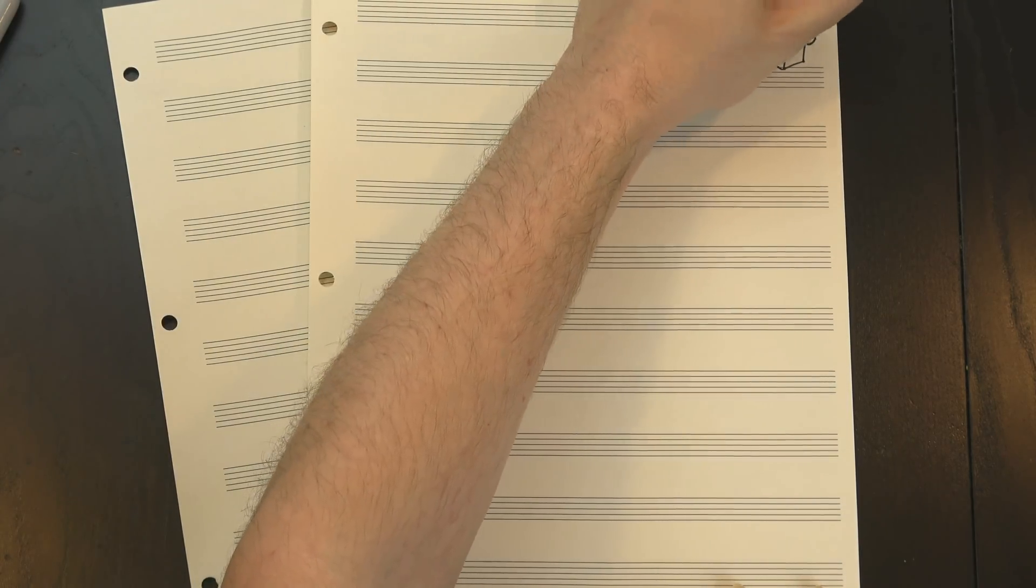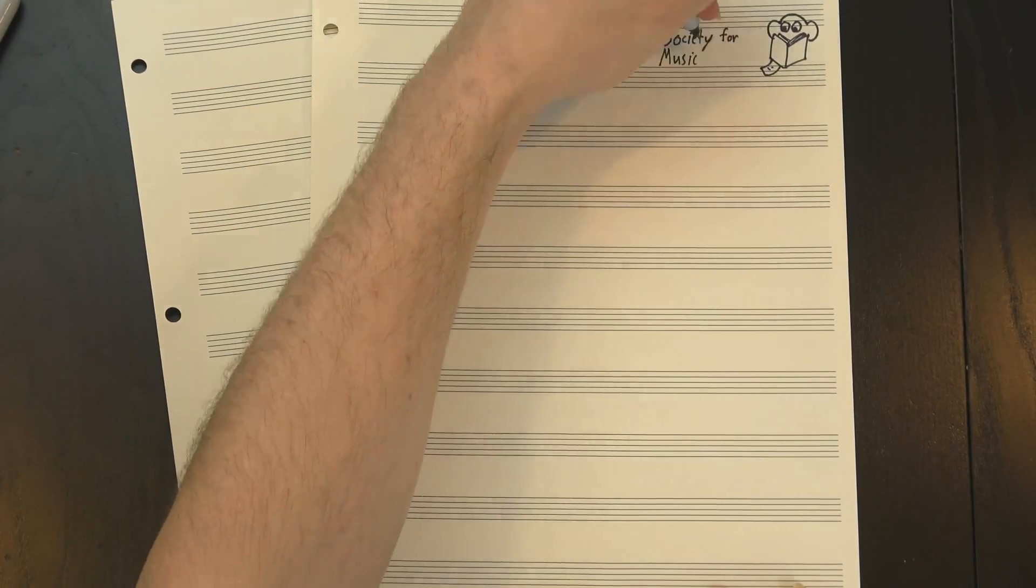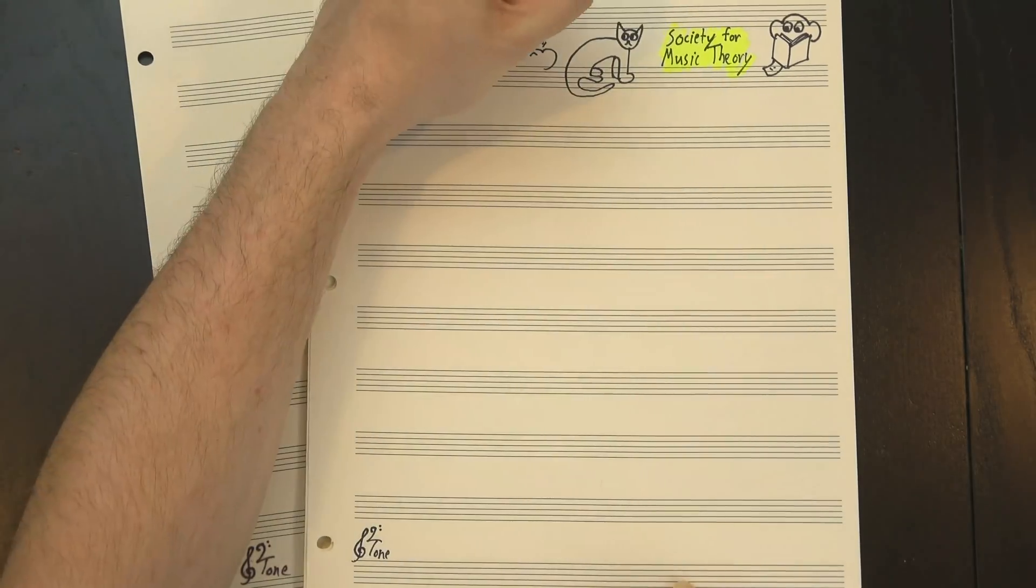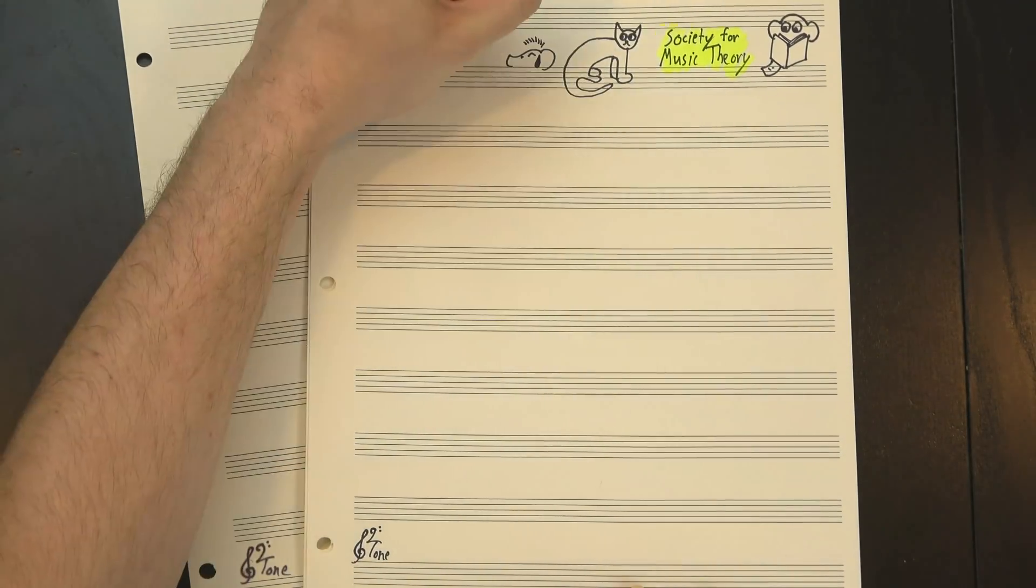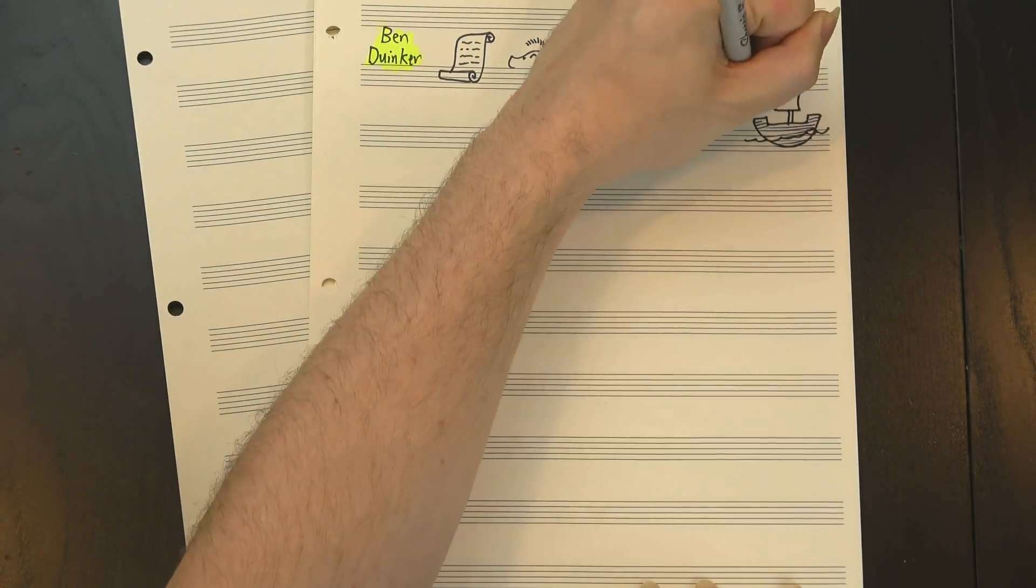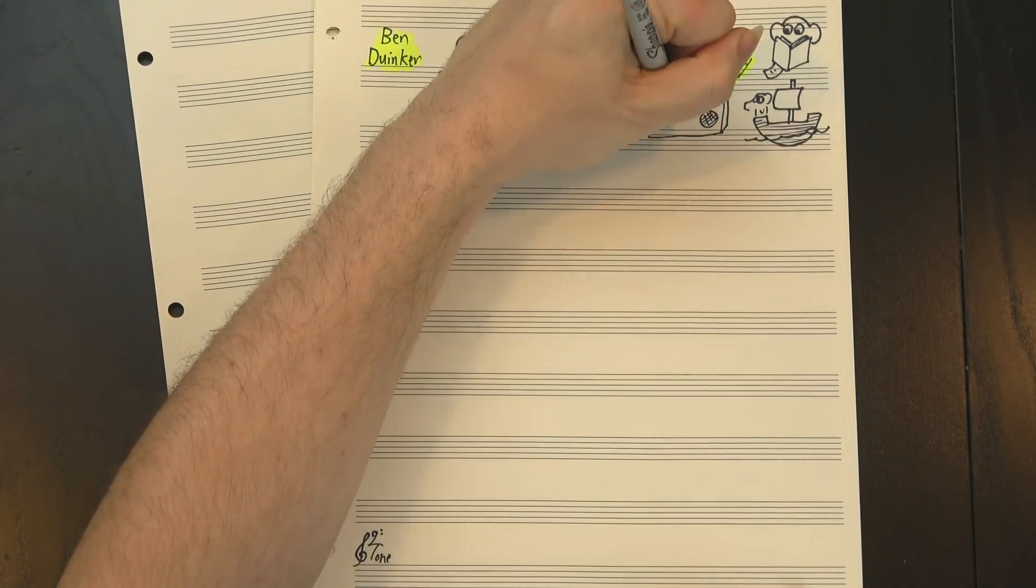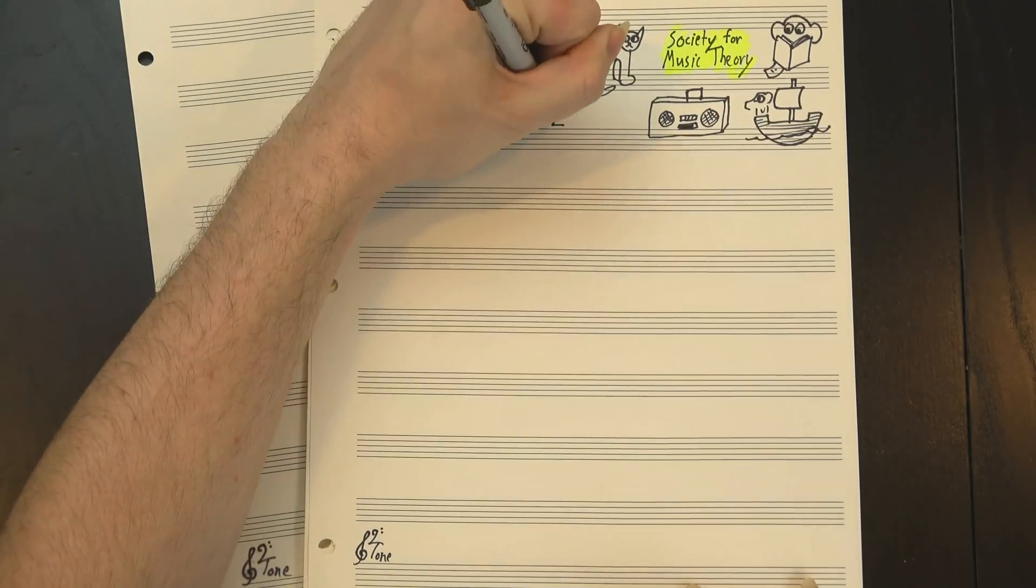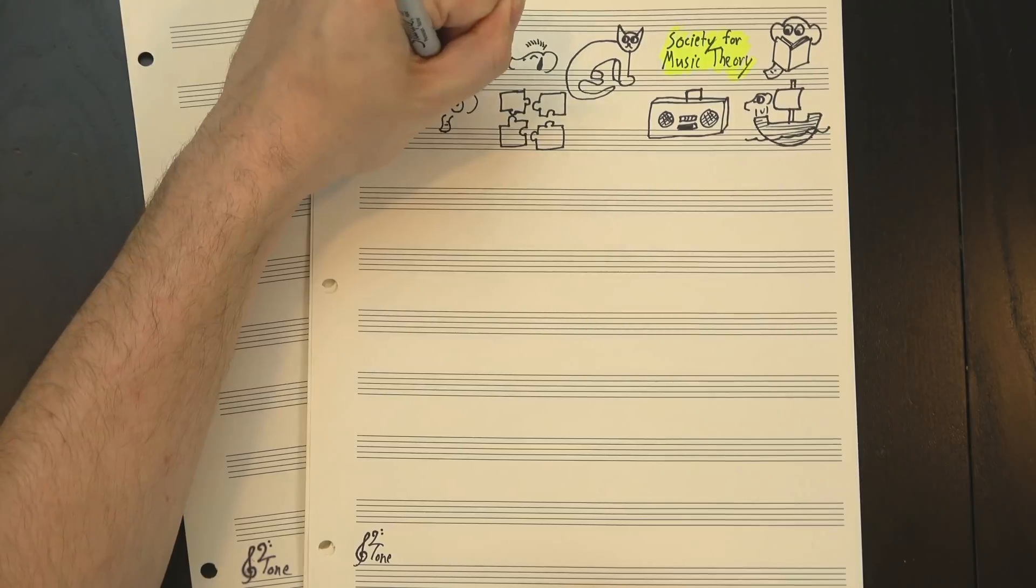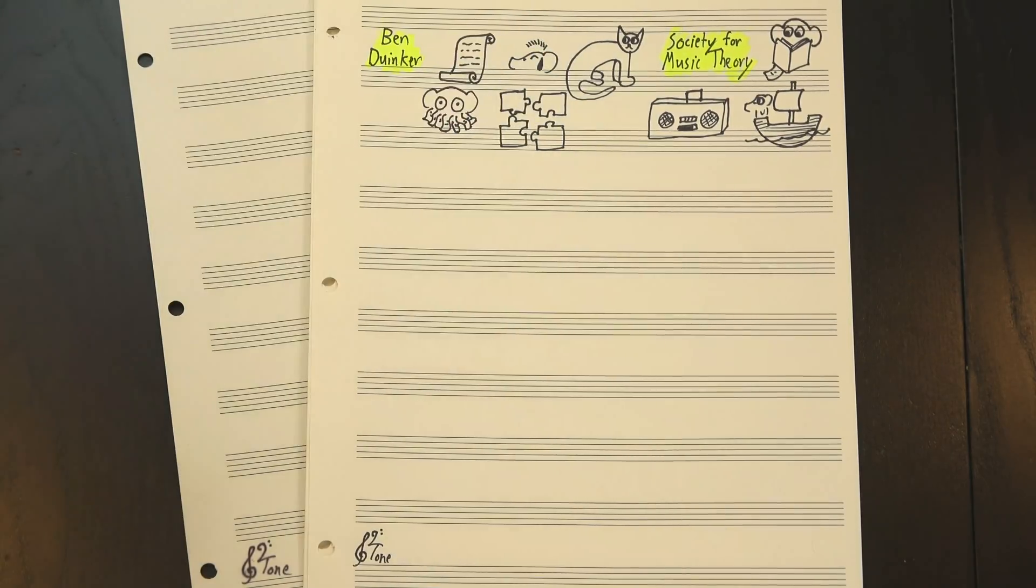Over the weekend, I was browsing through some recent editions of MTO, the free online journal published by the Society for Music Theory. I know, super relatable story, we've all been there, that's what you were thinking, right? Anyway, I stumbled across a really interesting article by theorist Ben Dwinker that explored a strange new chord progression that's been popping up more and more over the last decade or so, and doesn't really seem to fit with how we tend to think about harmony. So what is this mysterious chord progression that music theory can't explain? Check it out.